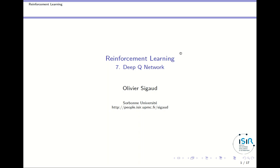Welcome to the seventh class about deep reinforcement learning. We are now switching from standard discrete state and discrete action reinforcement learning to the deep reinforcement learning case where the state and action can be continuous. In this class I will introduce the famous DQN algorithm, which uses a continuous state and a discrete action domain, and we will make use of concepts presented in the previous classes.